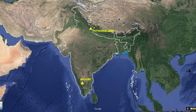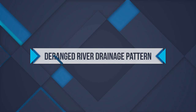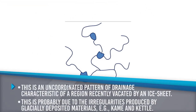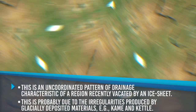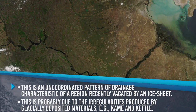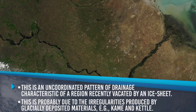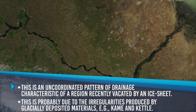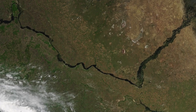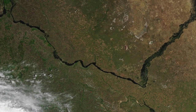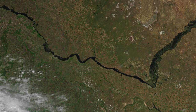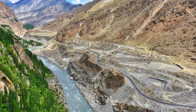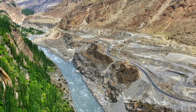Deranged River Drainage Pattern: This is an uncoordinated pattern of drainage characteristic of a region recently vacated by an ice sheet. It is due to irregularities produced by glacially deposited materials such as kames and kettles, and the insufficient time for drainage to become adjusted to the structures of the solid rock underlying the glacial drift. This type of drainage is found in the glaciated valleys of Karakoram.